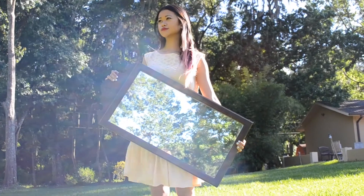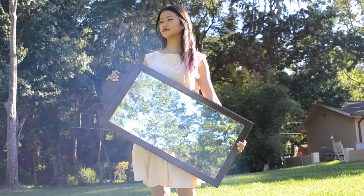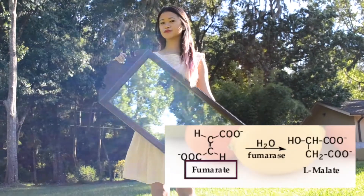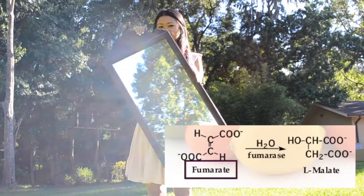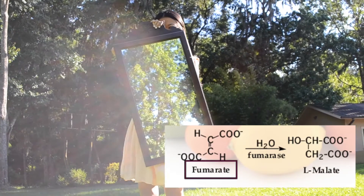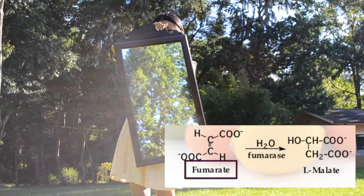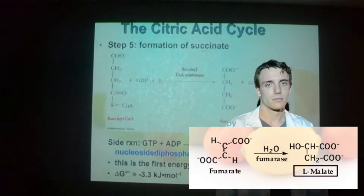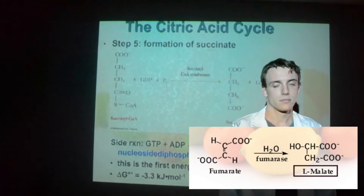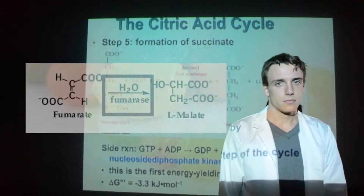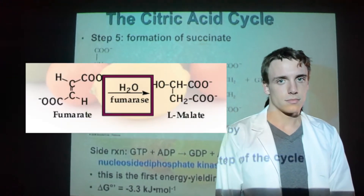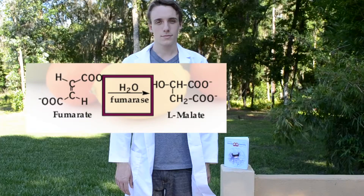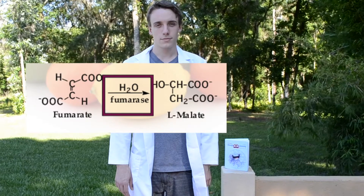Step 7 takes fumarate and turns it into malate, using water and fumarase.